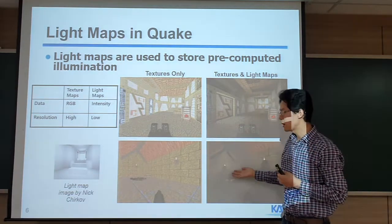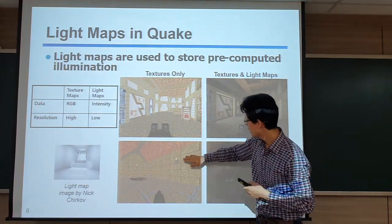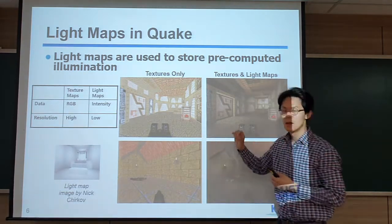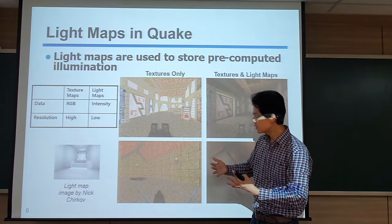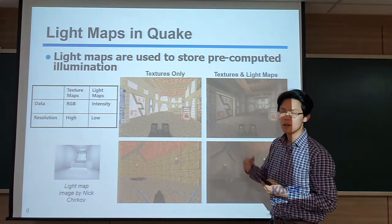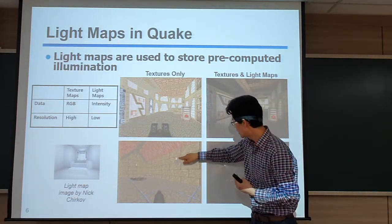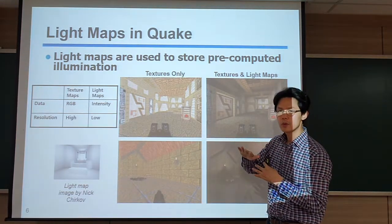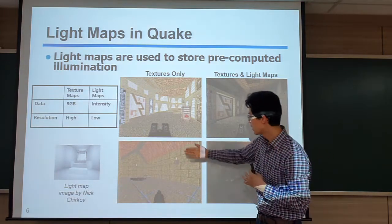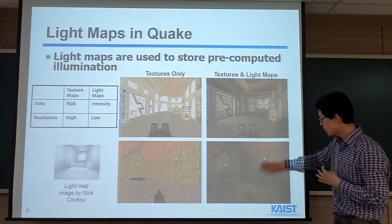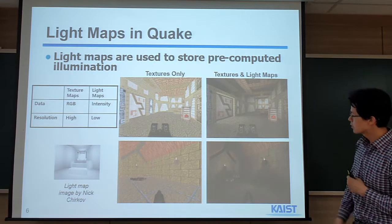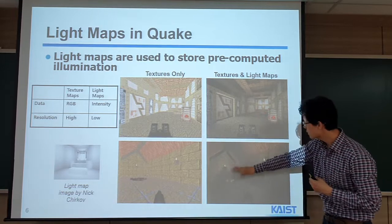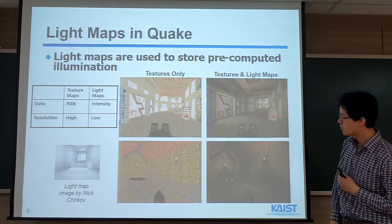Here is another example. If we just rasterize triangle texture, we don't get any light. But we pre-compute the light. Around this fire, there should be light. So we pre-compute that kind of lighting effect onto the 2D map, and then consider it when rasterizing the triangle. So we can get this region looking more brighter than the rest of the area.